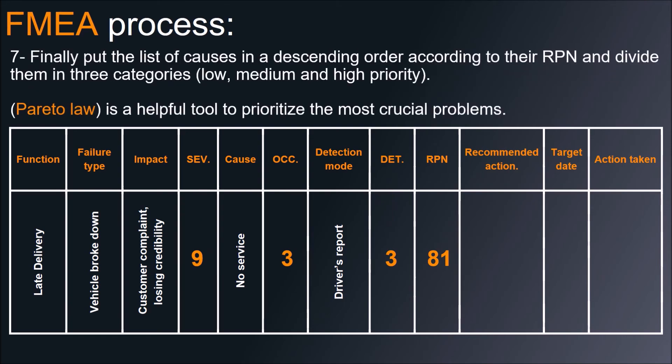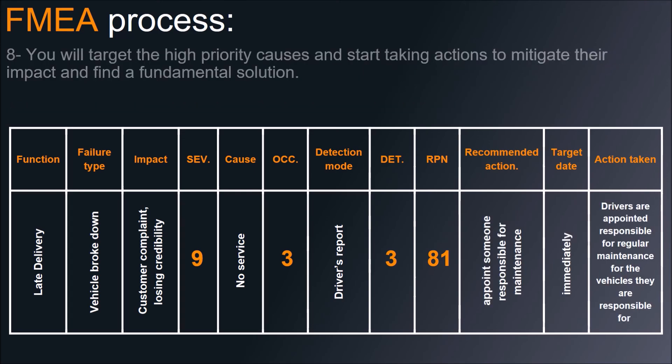Finally, put the list of causes in descending order according to their RPN, and divide them into three categories: low, medium, and high priority. You will target the high-priority causes and start taking actions to mitigate their impact and find a fundamental solution.